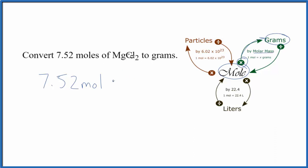We're just going to multiply by the molar mass of magnesium chloride. We look up the atomic mass for magnesium and then chlorine. We'll get a molar mass of 95.21 and the units are grams per mole.